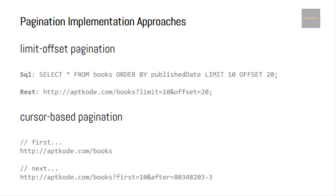There's nothing wrong with the limit-offset implementation, but cursor-based pagination is more powerful. Basically we have a cursor to an item, and cursors are essentially pointers to other data. We need to implement cursor-based pagination in GraphQL if you are using Relay on the front end. There is no restriction that you can't use limit-offset pagination — it's up to you and the application context. I'm going to implement cursor-based pagination in this tutorial because it's somewhat more difficult to implement.